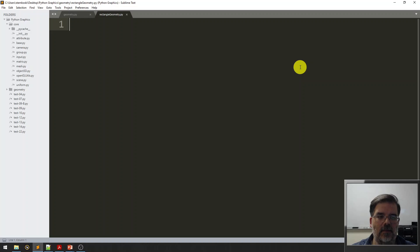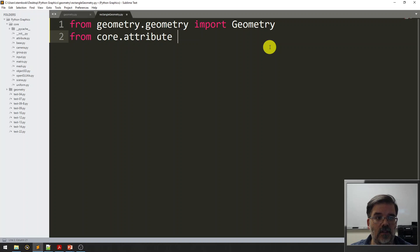In this class, we're extending the Geometry class. So we'll need to import that. And remember, the Geometry class is in a file named Geometry within the folder named Geometry. So this is not redundant. And I want to import that Geometry class. In this case, with a capital G, we like to use capitals for our class names. Also, from the core directory, we're going to start using attributes now. So from core.attribute, we're going to import attribute. Always be careful with those capitals. Let's define the class. Class RectangleGeometry. It extends the Geometry class this time.